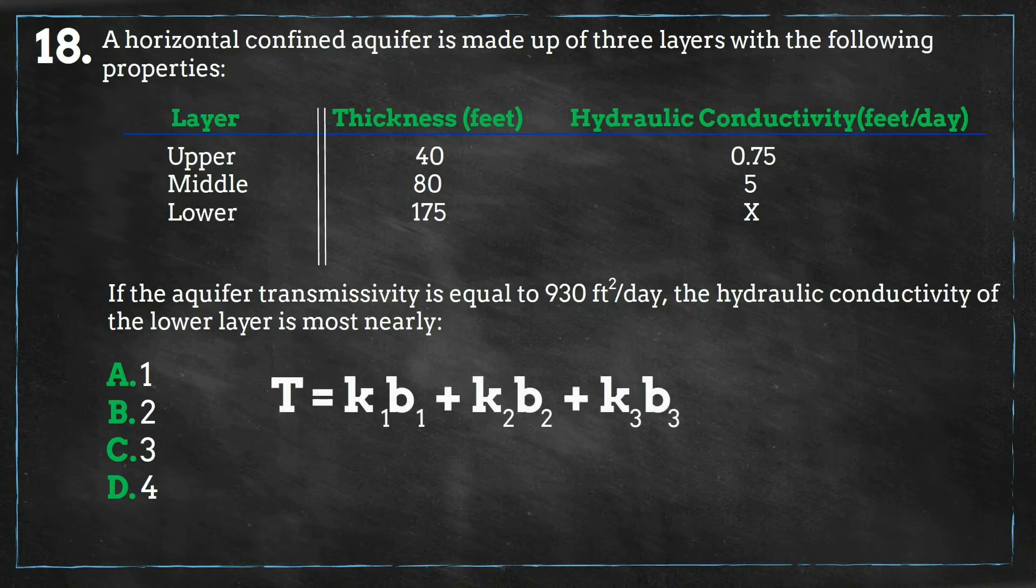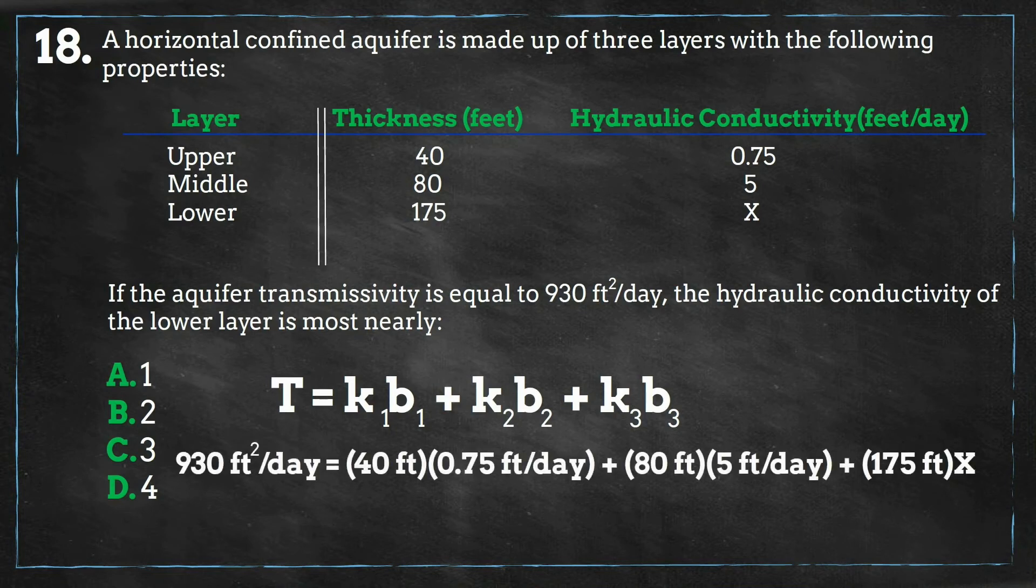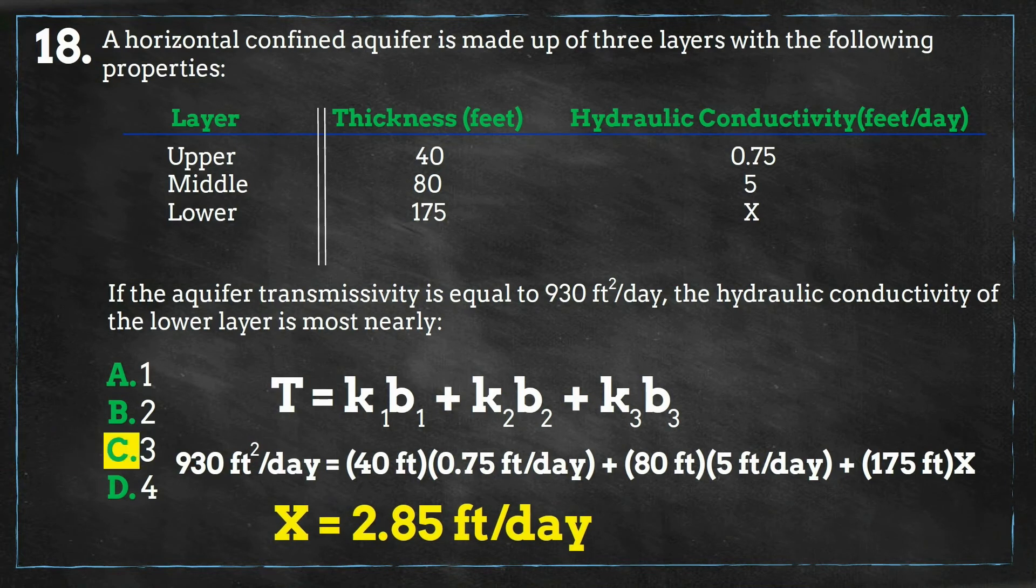We can set up our equation where the aquifer transmissivity, T, is equal to the sum of the products of each layer's thickness and hydraulic conductivity. We can solve for X, and we get a hydraulic conductivity of 2.85 feet per day for the lower layer, which is closest to C.